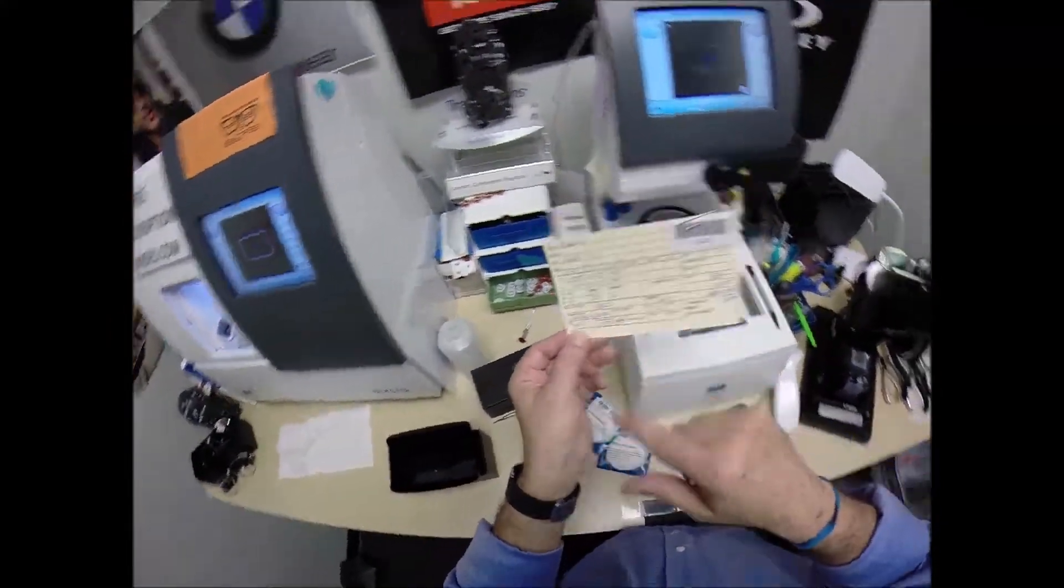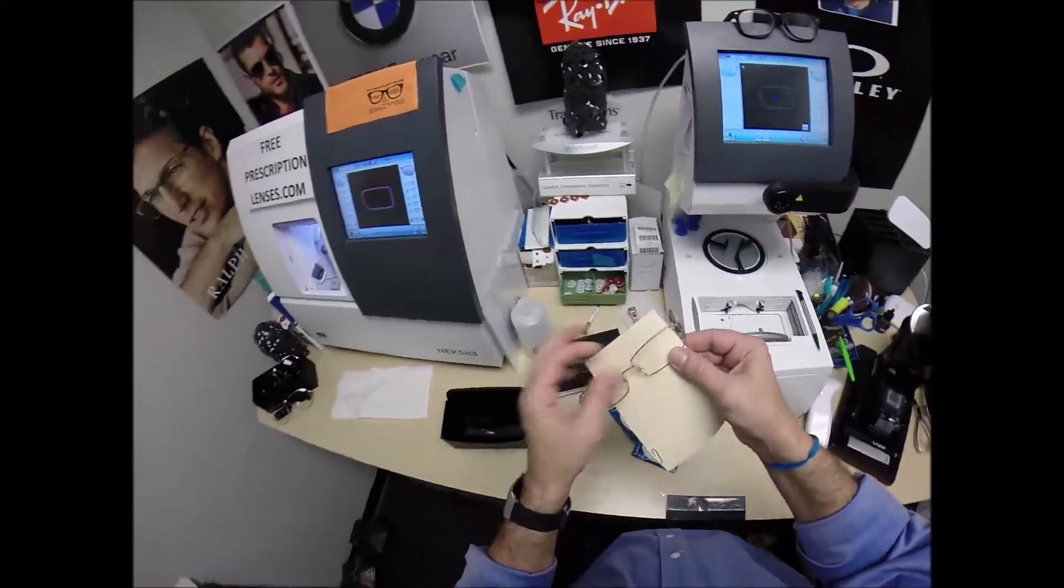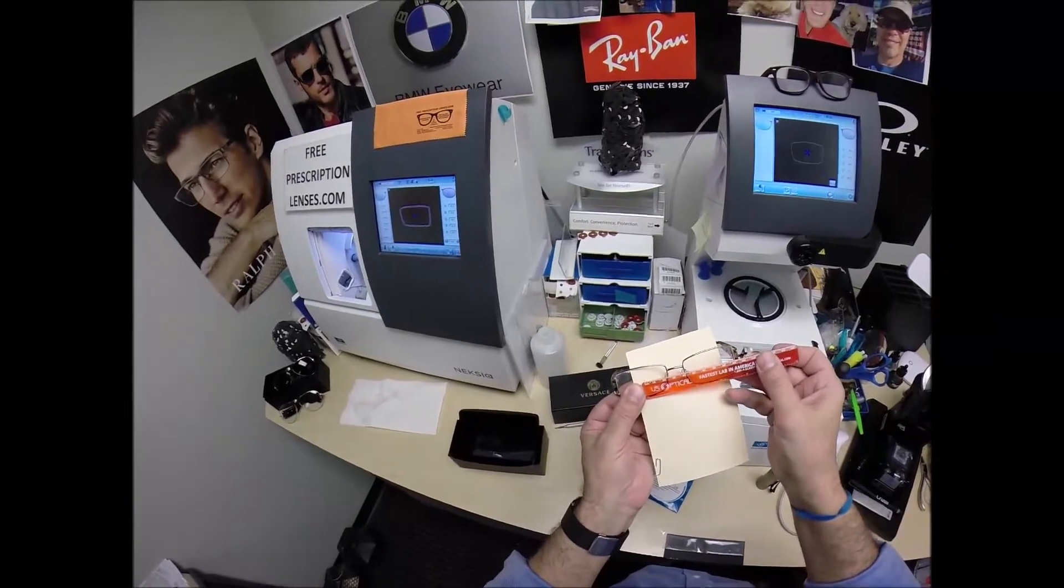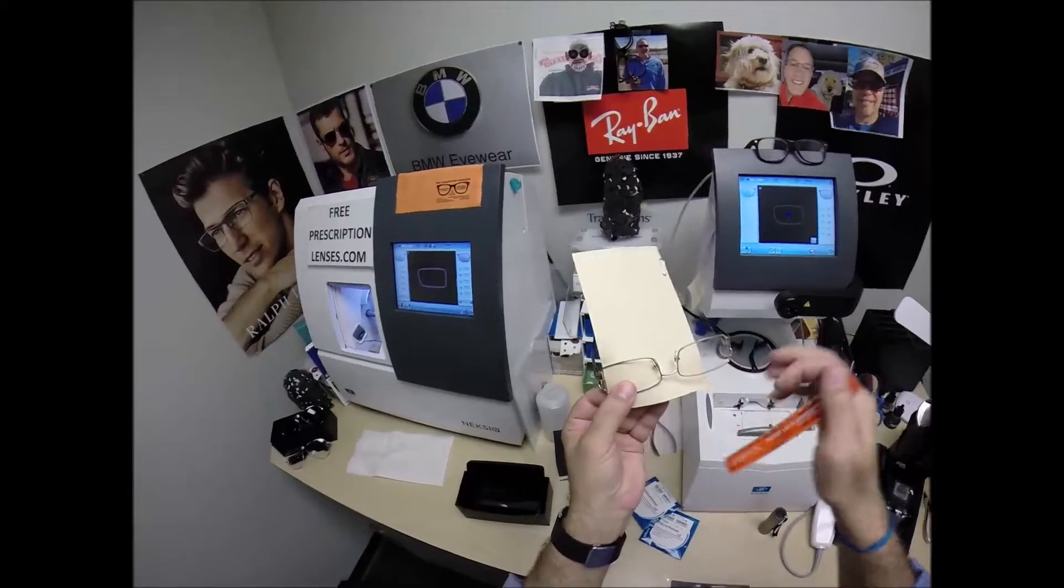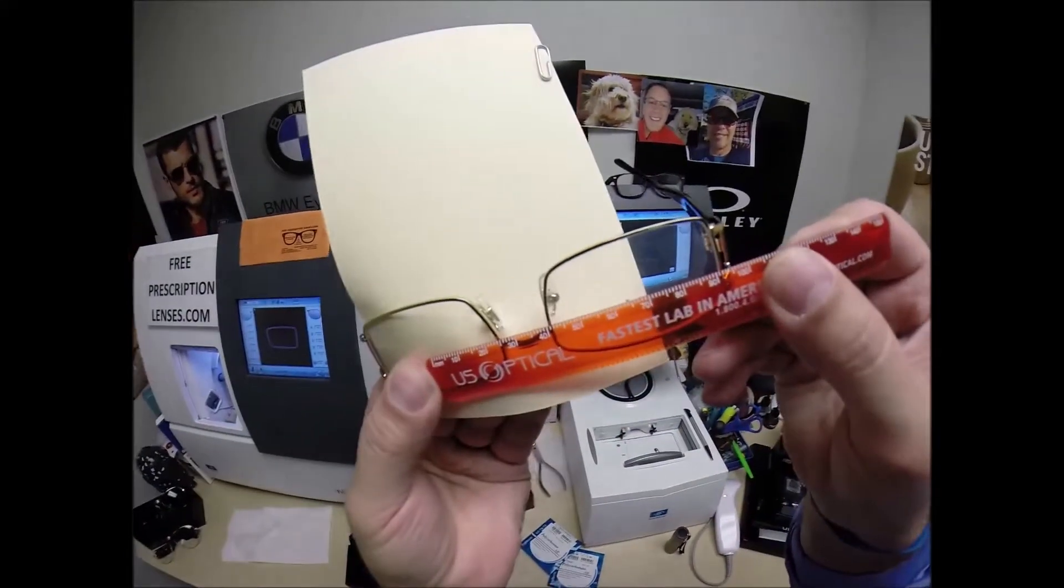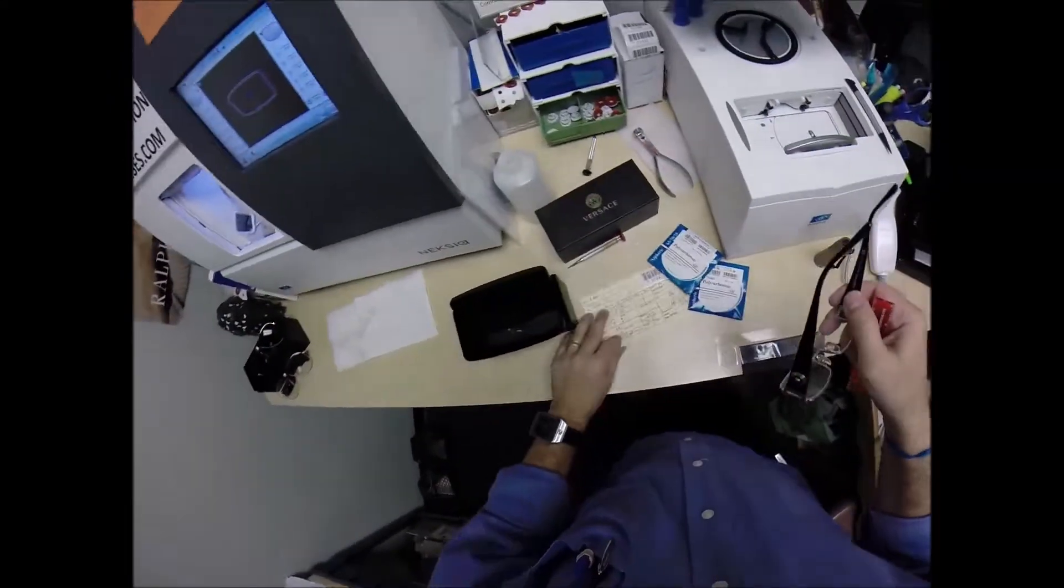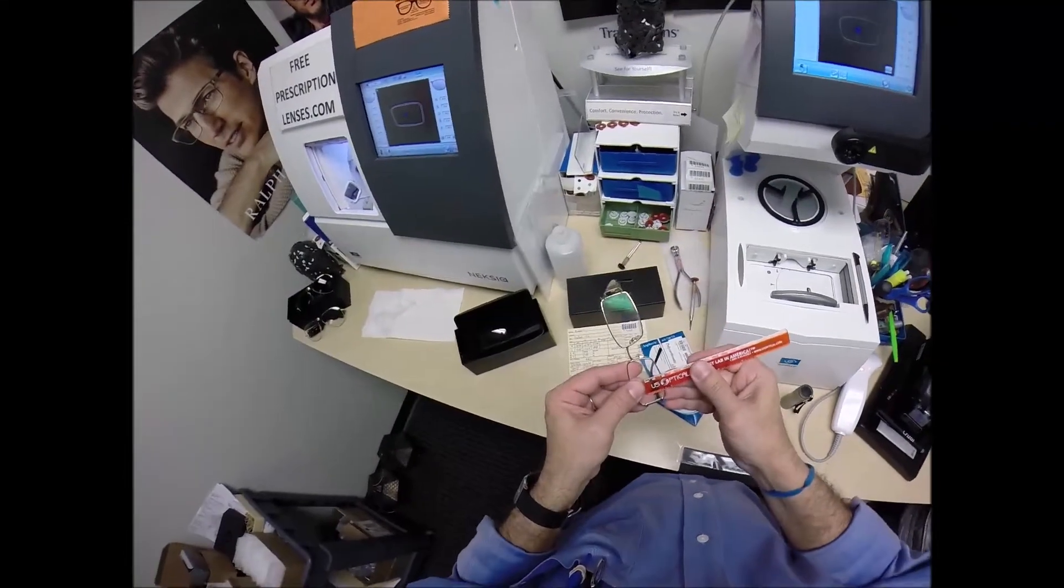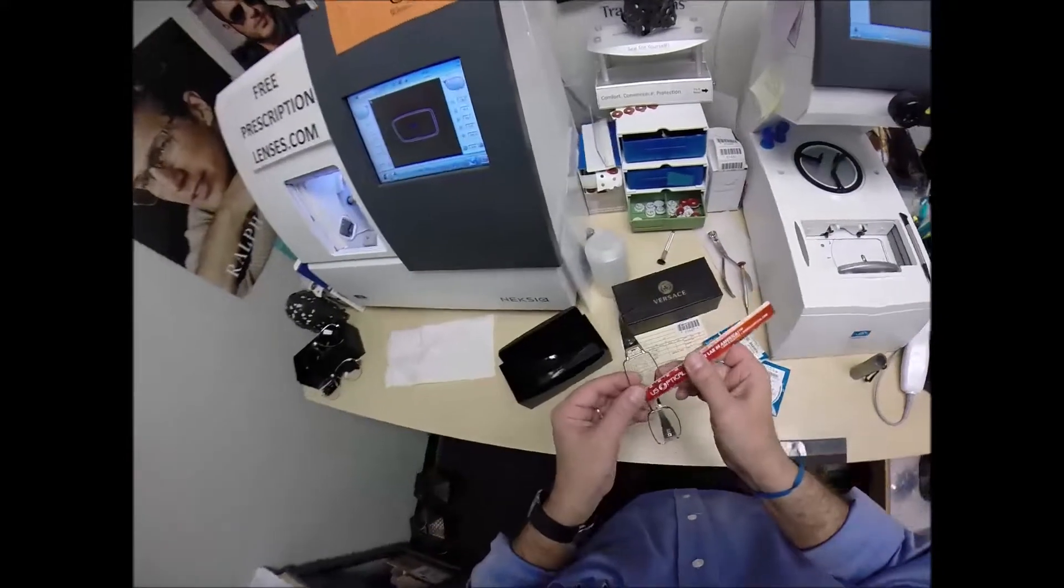Your pupillary distance is 64. I'm going to place the PD stick against my thumb on the right lens. Then we look at it on the left lens. We're getting 64 millimeters. So that is cut perfectly. I'm going to check the optical center height of 18. Two millimeters above the center. We are good. Robert, you are good.